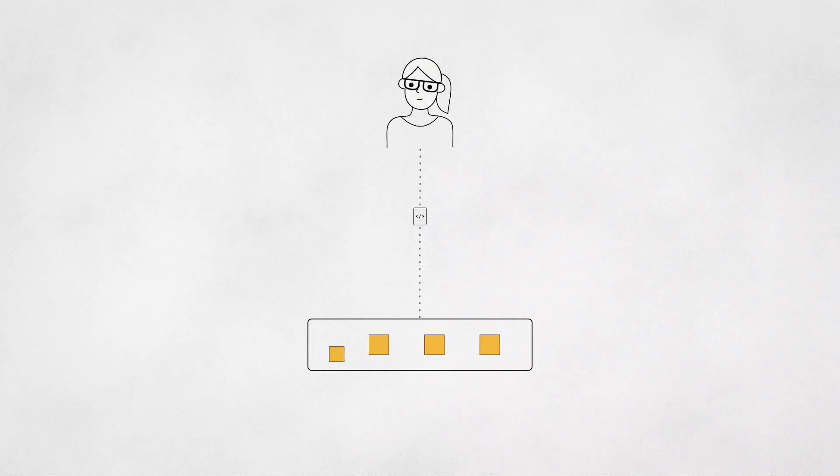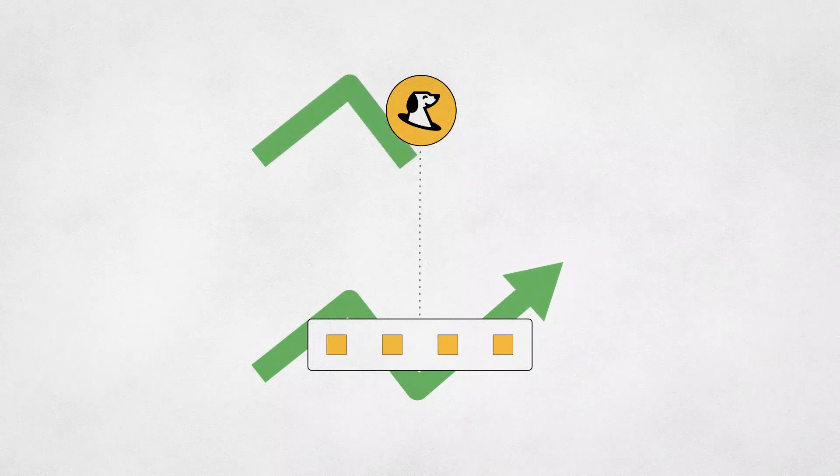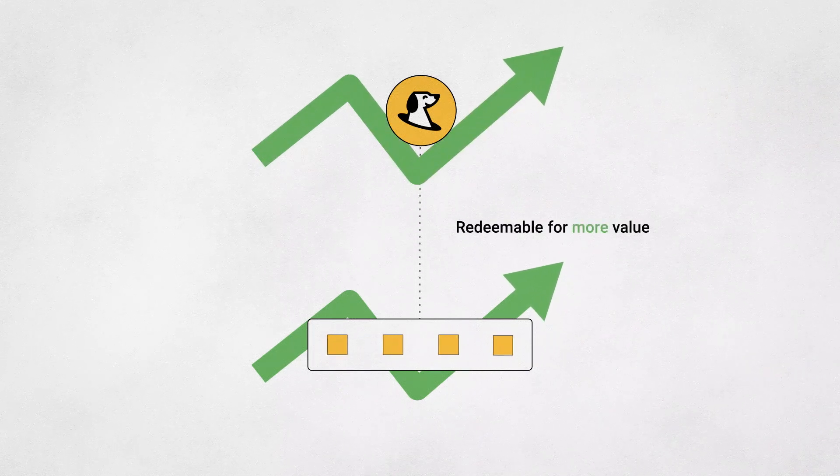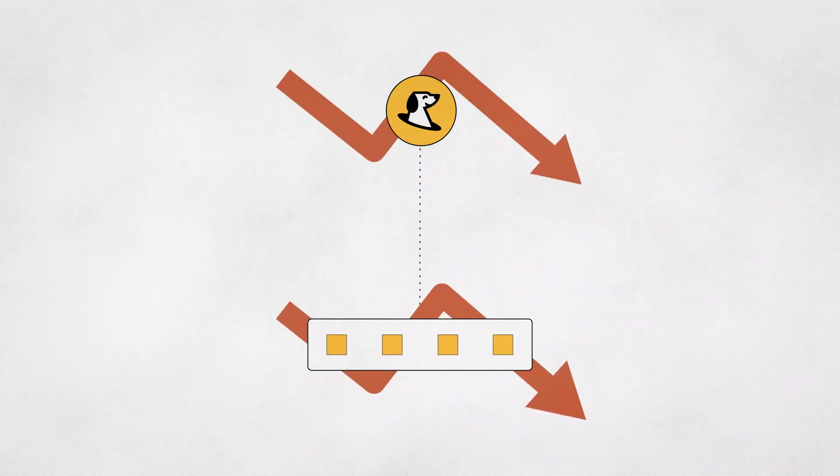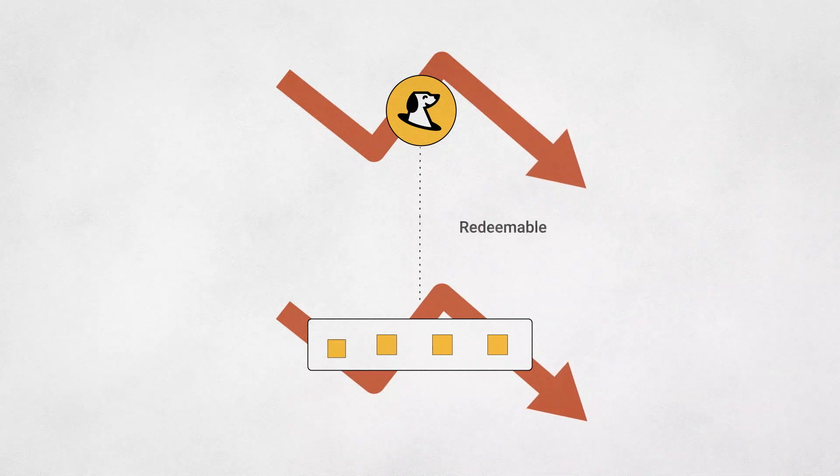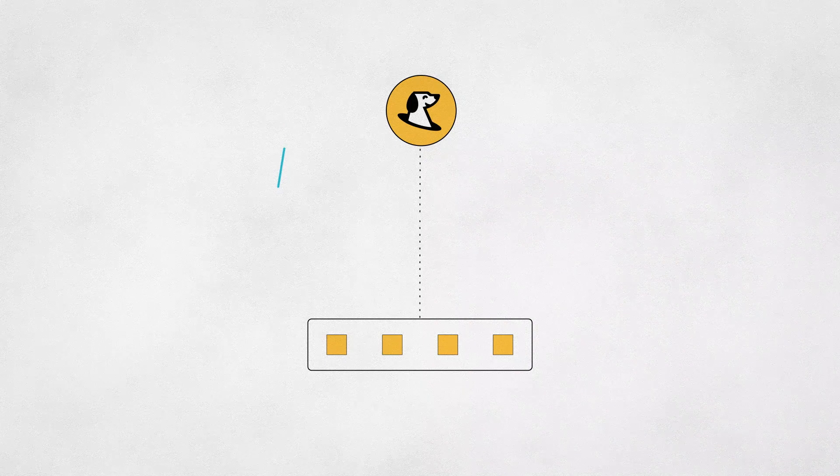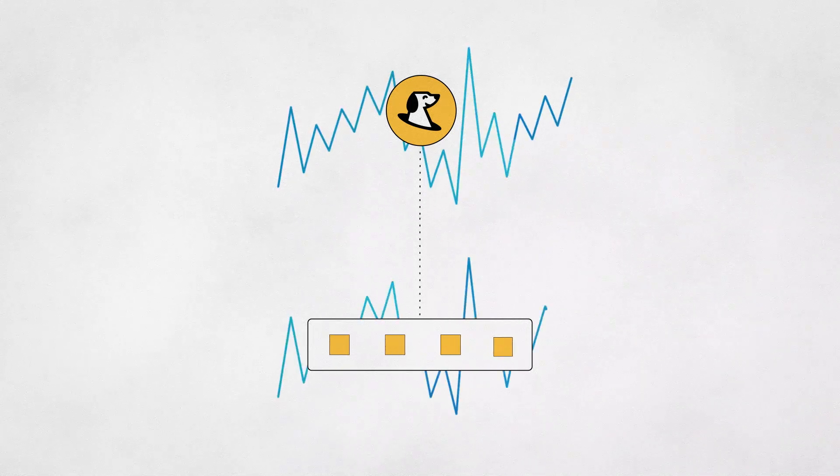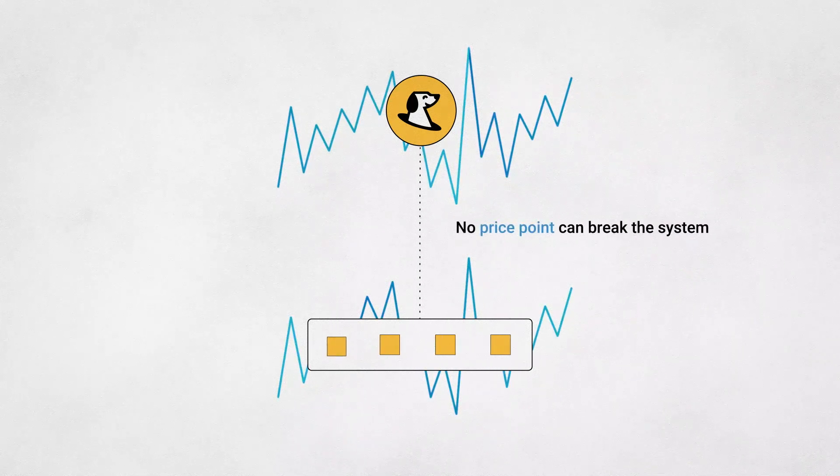If the value of the assets in SPOT's collateral set goes up, the price of SPOT will likely go up, because each SPOT token is redeemable for more value. If the value of the collateral goes down, the price of SPOT will likely go down, because each SPOT token is redeemable for less value. The price of SPOT can be any value, because SPOT is just a redeemable claim on a basket of assets, and no price point can change the behavior or break the system.